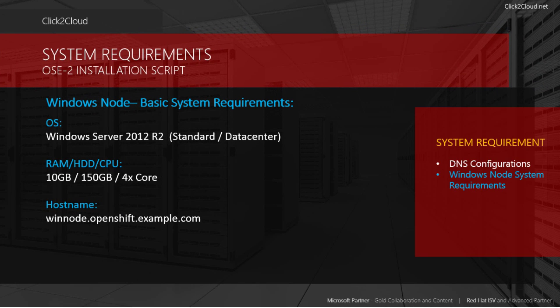We first need to plan system requirements. Basic system requirements are displayed on your screen. For OS, we are using Windows Server 2012 R2. We are using RAM of 10 GB with 150 GB hard disk and 4x core processor. For hostname, we have winnode.openshift.example.com.